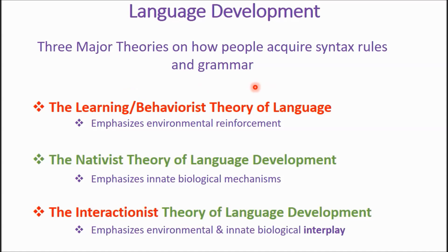To recap the three major theories: the learning behaviorist theory emphasizes environmental reinforcement and operant conditioning. Positive reinforcement means adding something to the situation — for example, giving someone a cupcake for doing a good deed. Negative reinforcement means removing something, essentially avoidance behavior — for example, taking out the trash to avoid your mother nagging you. The nativist theory of language development emphasizes innate biological mechanisms.